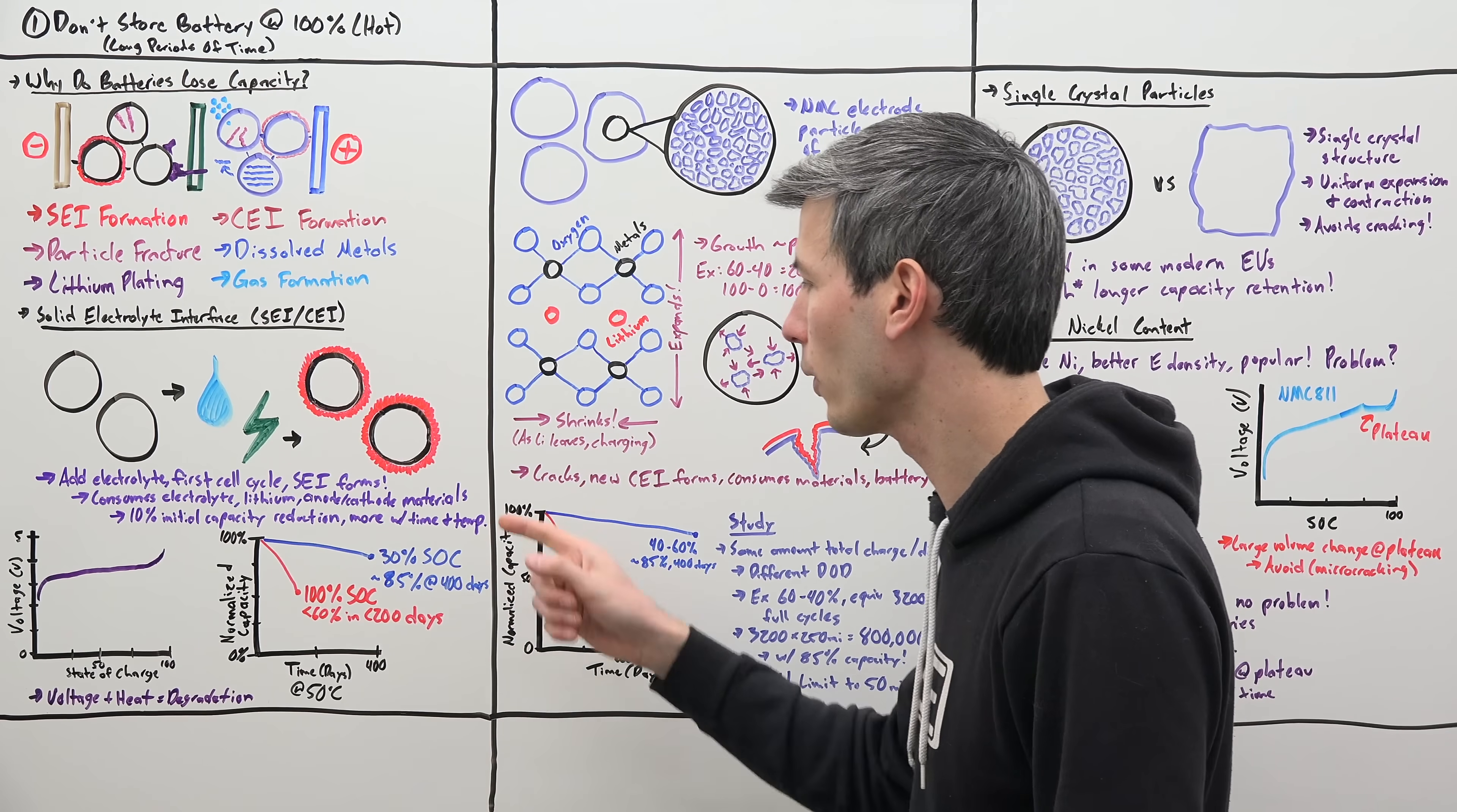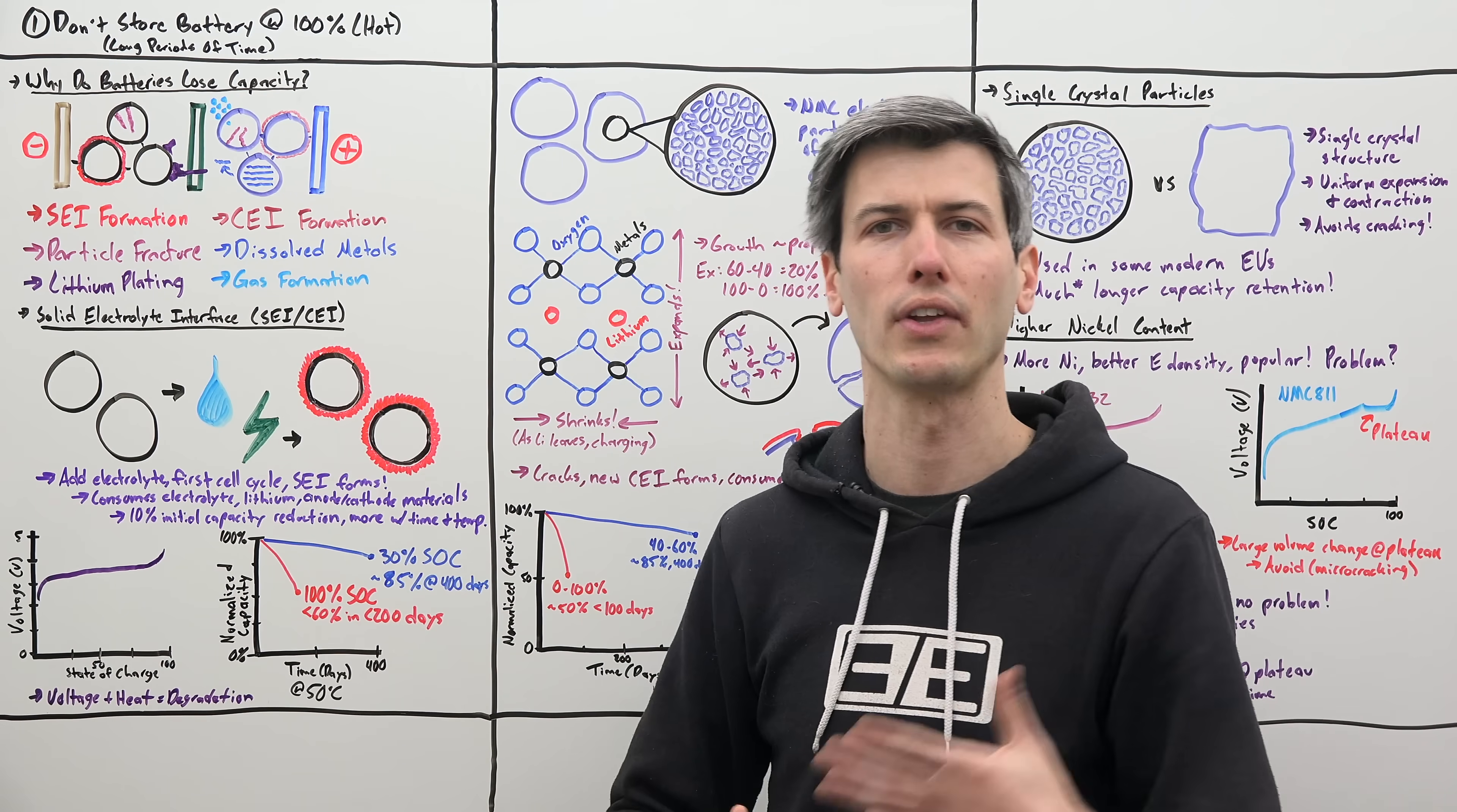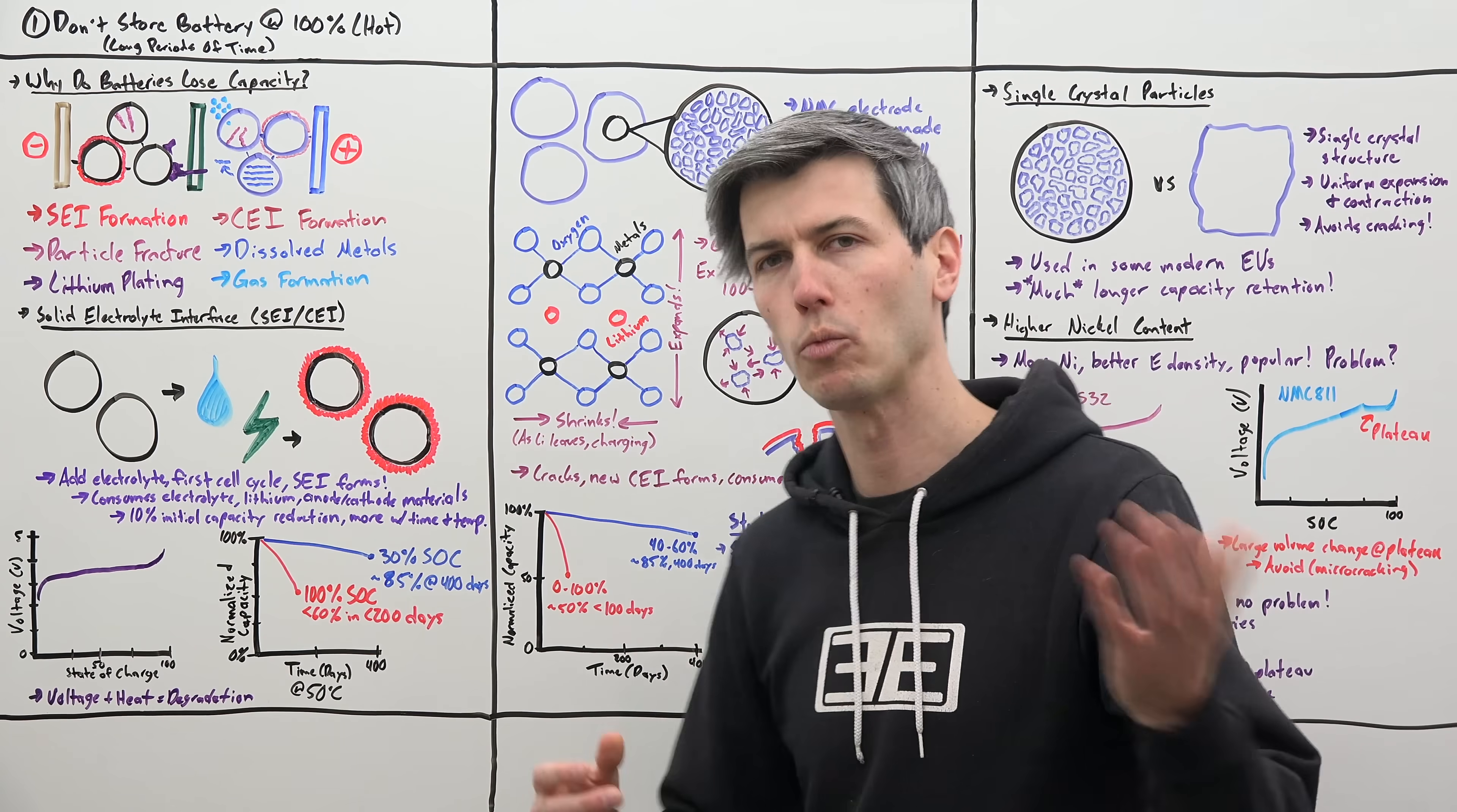And they stored these batteries with a different state of charge. So one of them at 100% state of charge, one at 90%, one at 80%, and so on. And what did they find?